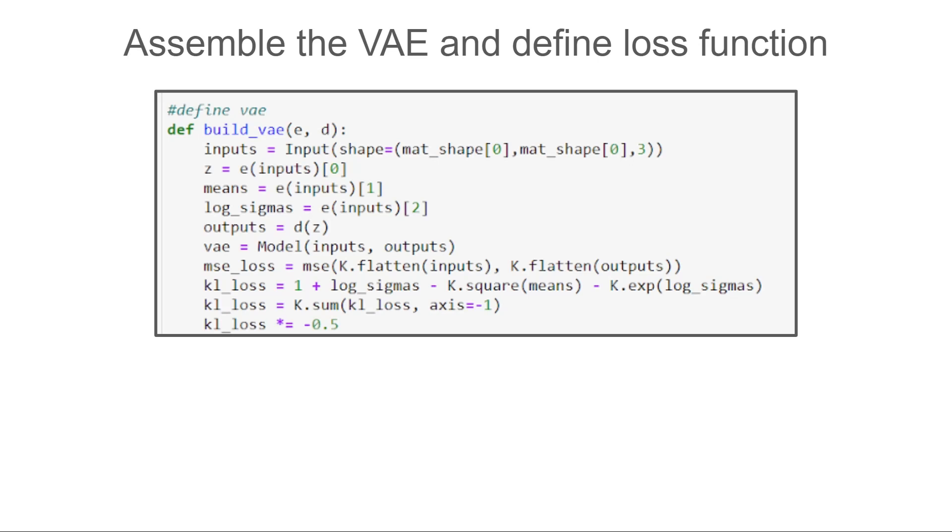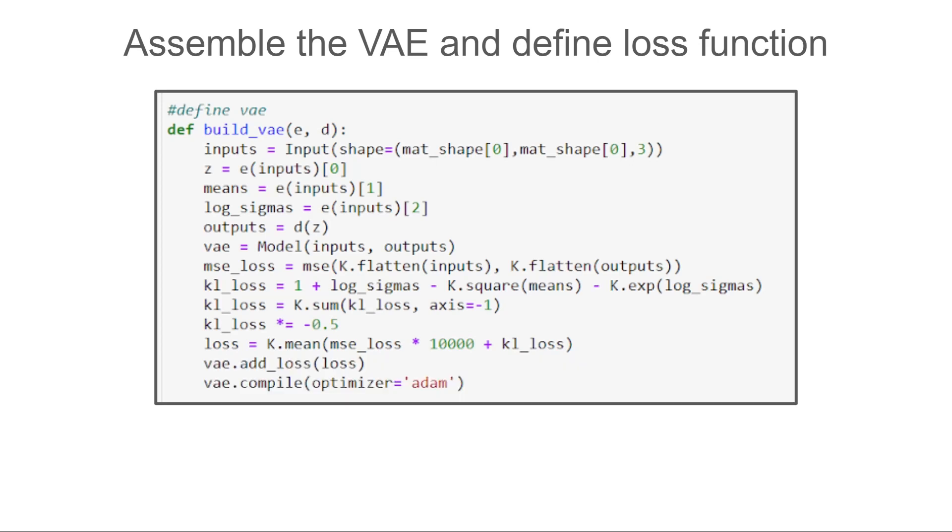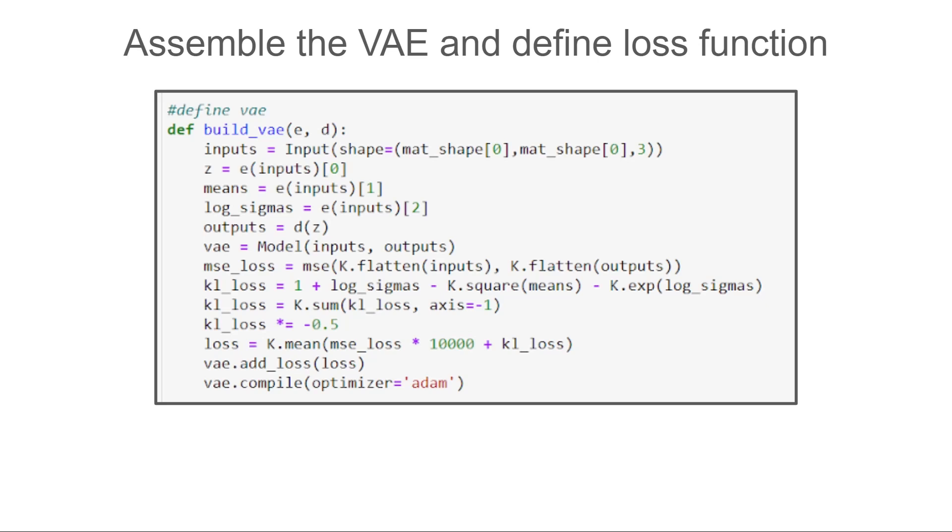The reason I multiplied the mean squared error term by 10,000 is that the units of the mean squared error term is usually much smaller and I want the model to give more importance to reconstruction quality than the KL divergence. Now in order to make the Keras model use a cost function that is not directly derived from input tensors and prediction tensors that we don't have here—it's unsupervised—we need to use the add_loss method. In order to track both terms during training we define two metrics, one for each term. Okay, that is all I think. Again, to see the full code please check my repository using the link in the description.